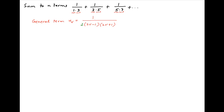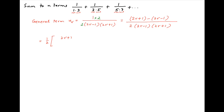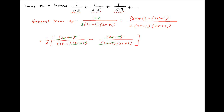Now multiply and divide by 2, and this can be written as 2r plus 1 minus 2r minus 1, divided by 2 times 2r minus 1 times 2r plus 1. This is equal to half of, in brackets, 2r plus 1 divided by (2r minus 1)(2r plus 1) minus 2r minus 1 divided by (2r minus 1)(2r plus 1). After cancellation, ur simplifies to half of 1 upon 2r minus 1 minus 1 upon 2r plus 1.